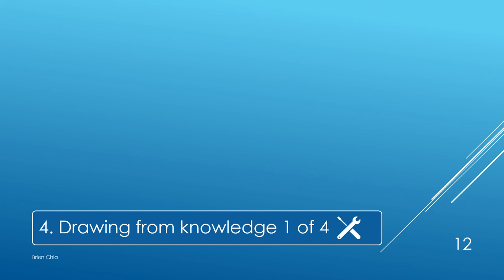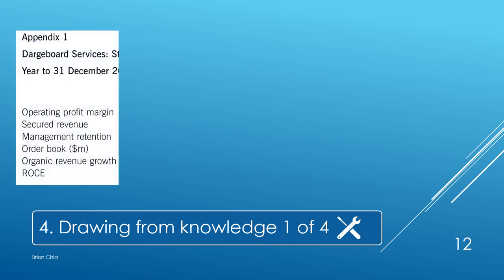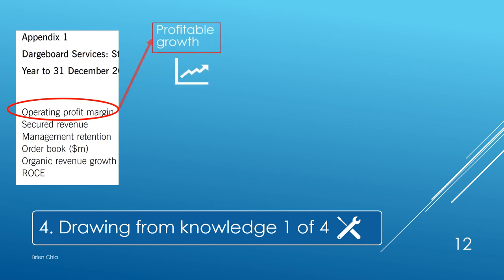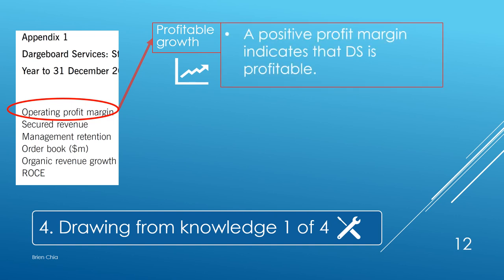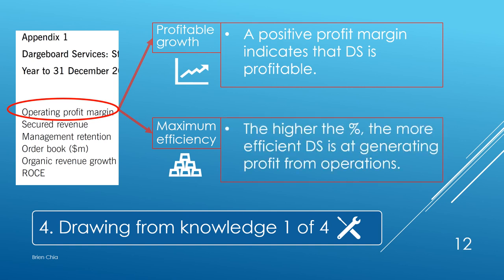Now we move to step four: drawing from our studies and knowledge. Looking at appendix one and the KPIs, we link them to the mission statement. Operating profit margin is linked to the profitable growth component of the mission — a positive operating profit margin indicates DS is profitable. It is also linked to maximum efficiency, because the higher the profit margin percentage, the more efficient DS is at generating profit from operations.